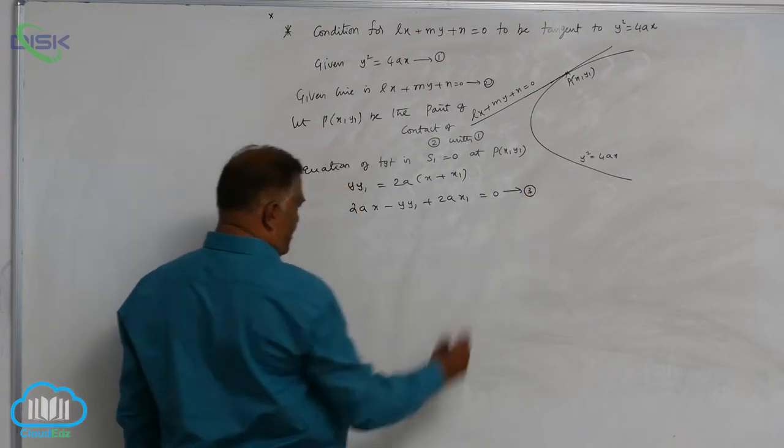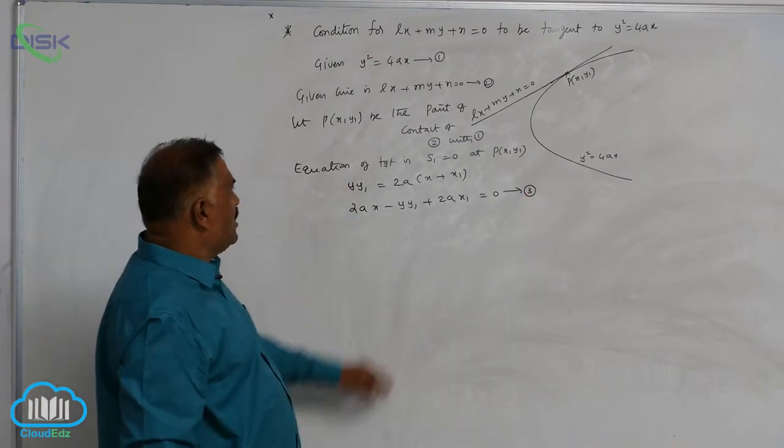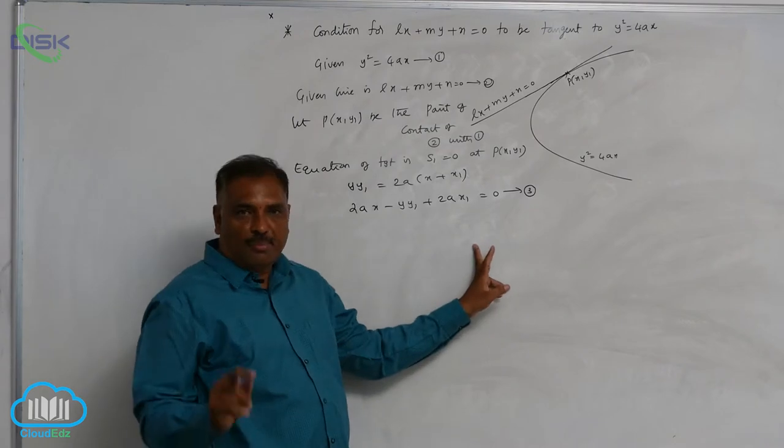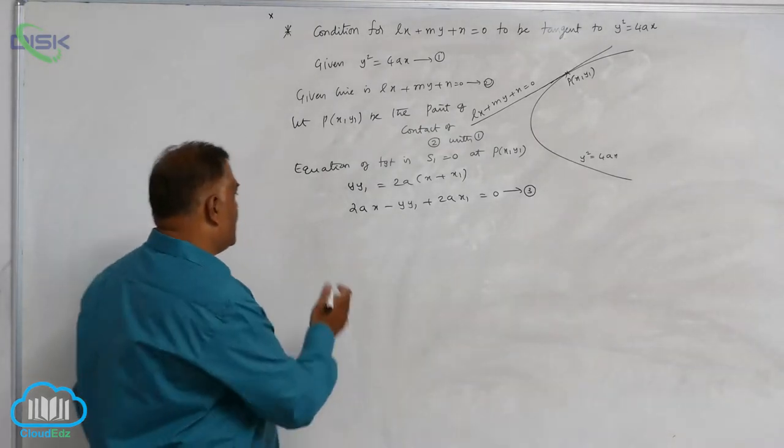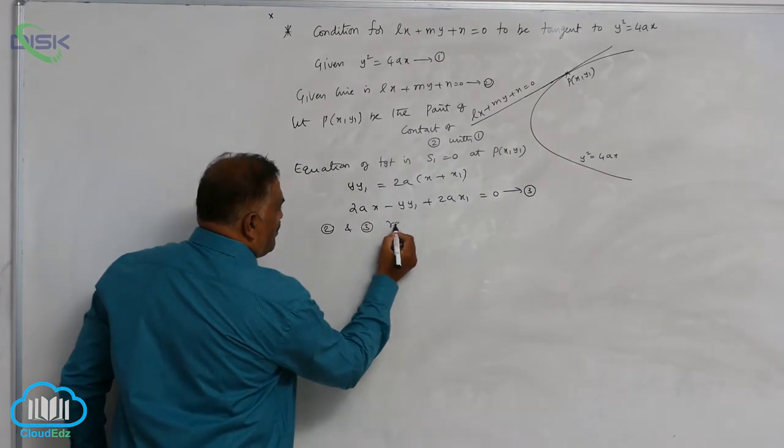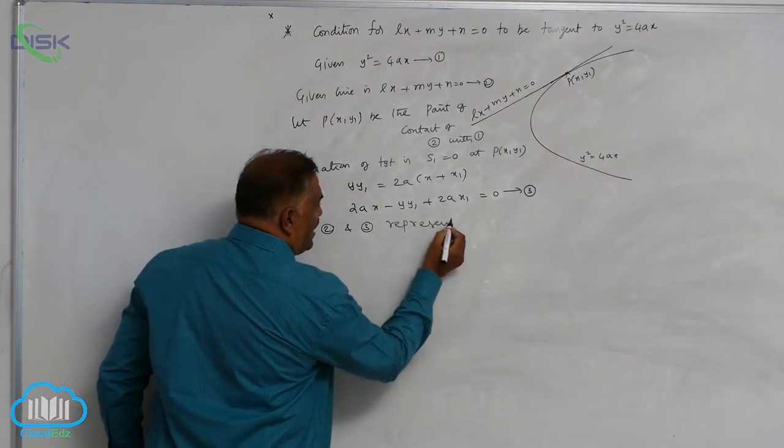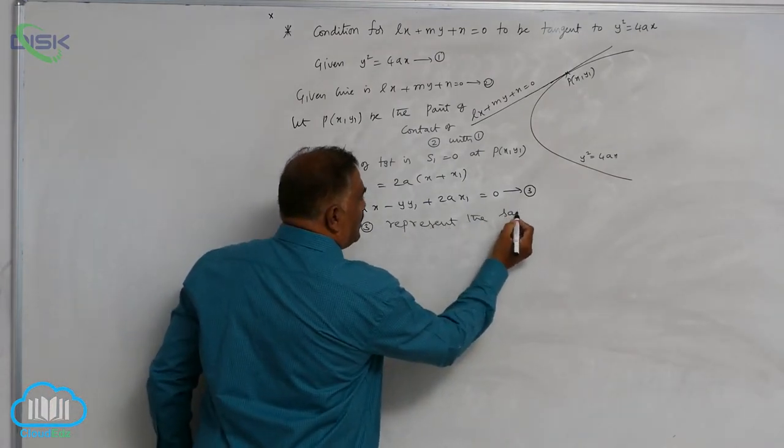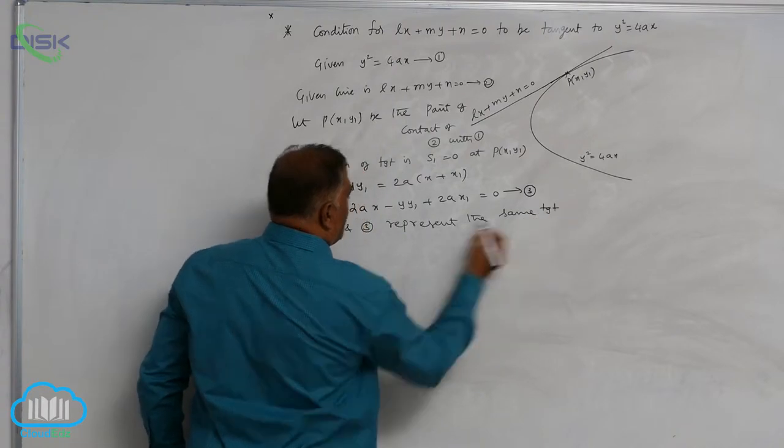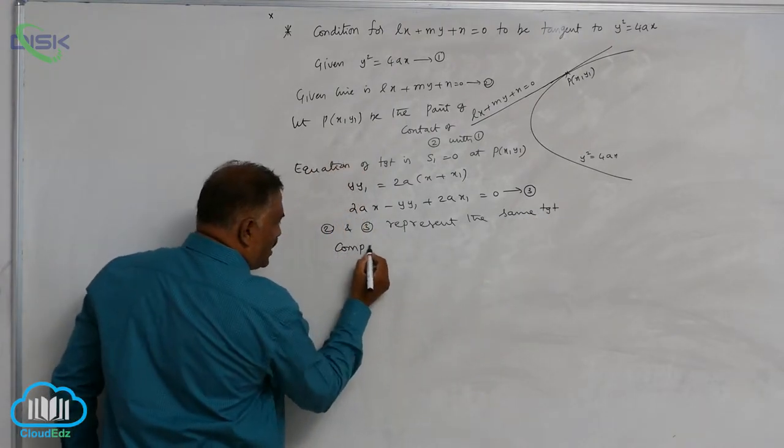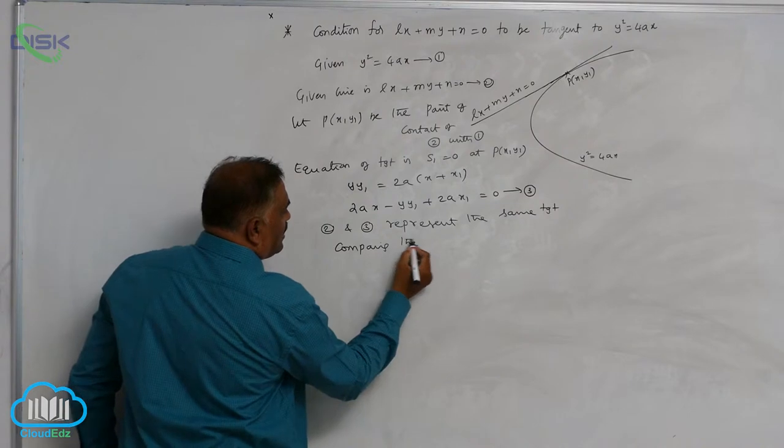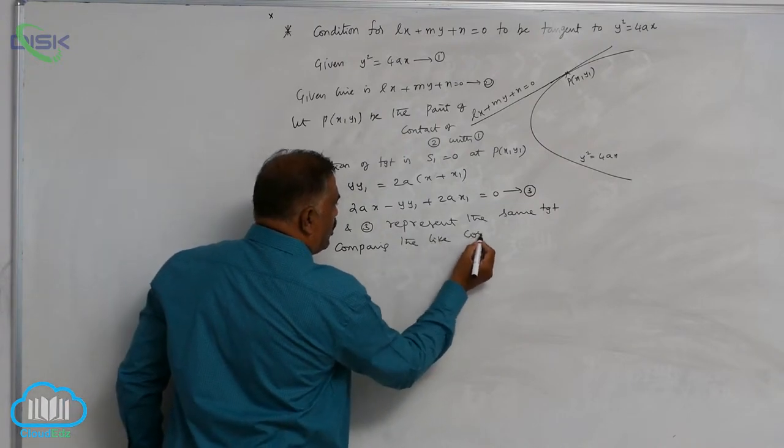We know that 2 and 3 represent the same tangent. So, 2 and 3 represent the same tangent. Comparing the like coefficients.